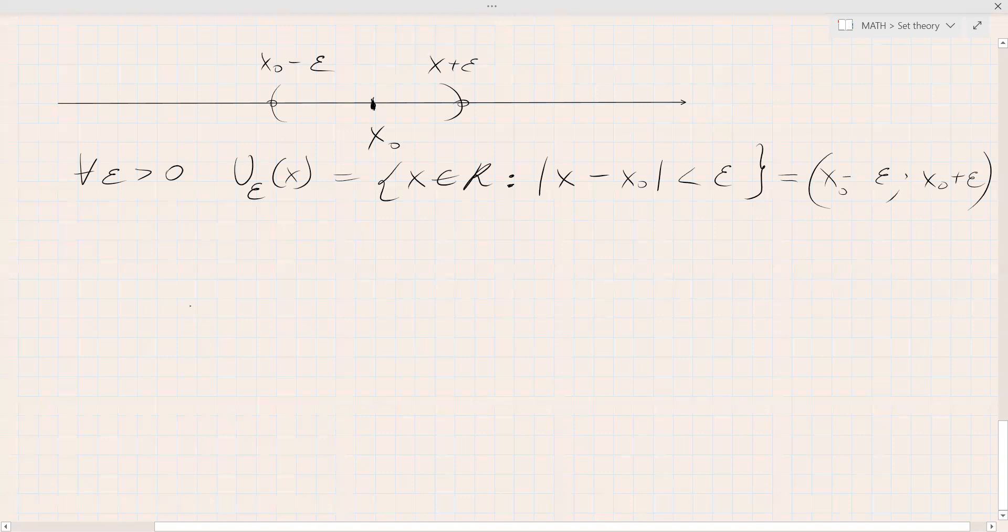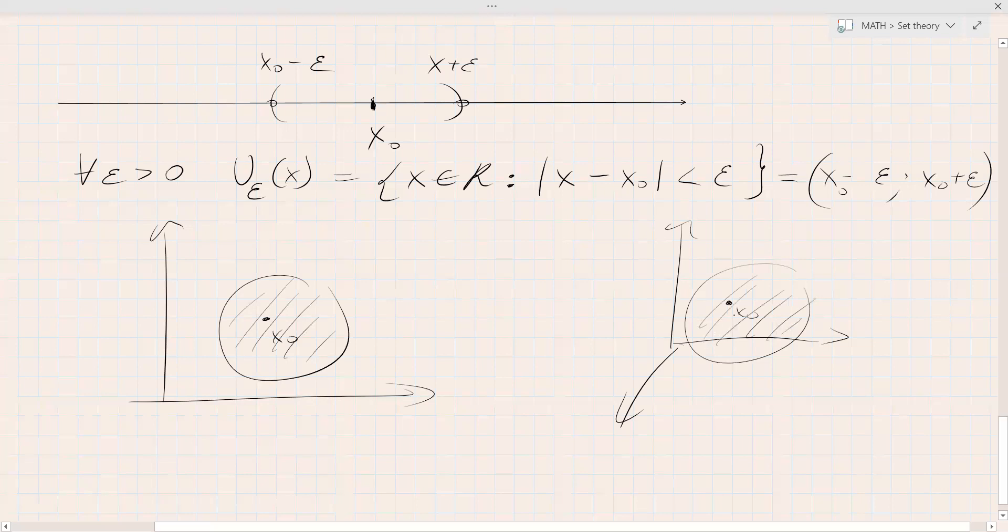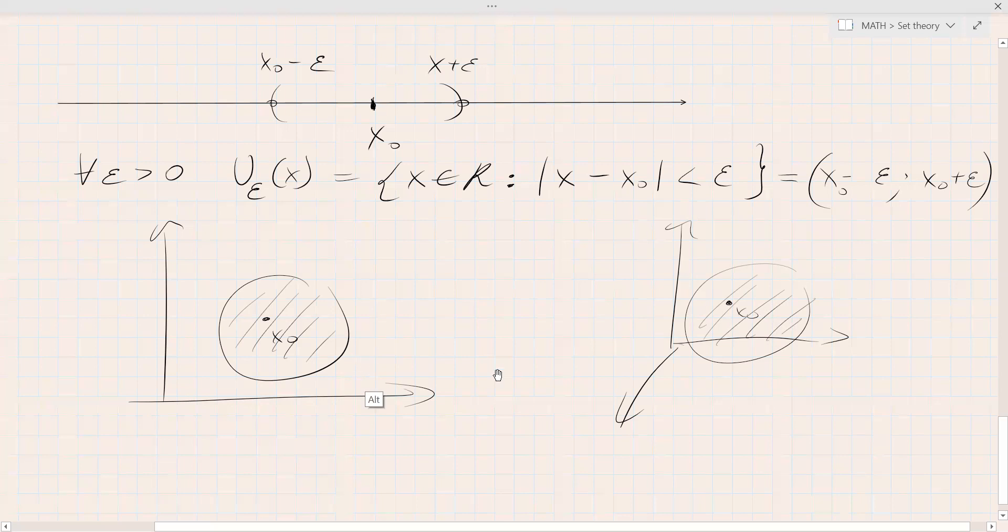Of course, we should mention that if we are in a plane already and we have a point on a plane x_0, then epsilon neighborhood is this circle. And if we are in a three-dimensional space and we have a point x_0 here, then this boundary or this neighborhood is a three-dimensional sphere. And so on, if we go further into dimensions we will get a sphere of n dimensions.